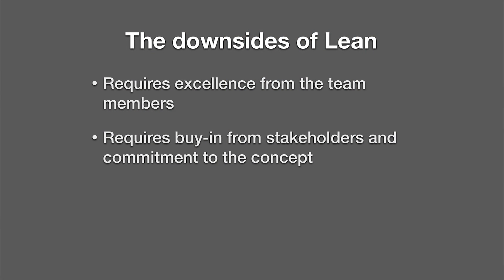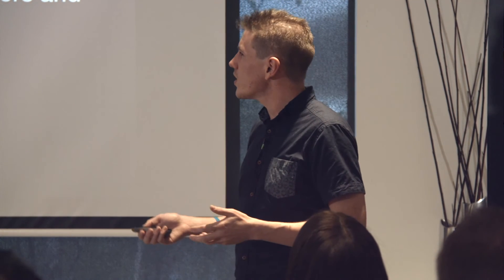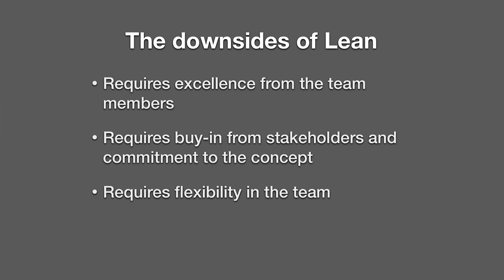It requires buy-in from stakeholders and commitment to the concept. If you do lean incorrectly — this is the hard problem of dogmatism — it can break down, because certain principles need to be adhered to to get the most out of it. If you think you're doing lean but you continuously increase scope until you're releasing something that's not lean at all, you'll think the lean process has failed. What's actually failed is that you haven't done the work to pare down your releases and release something small.